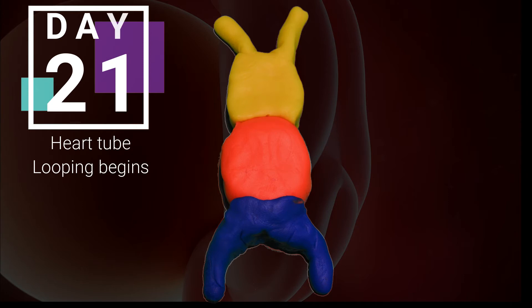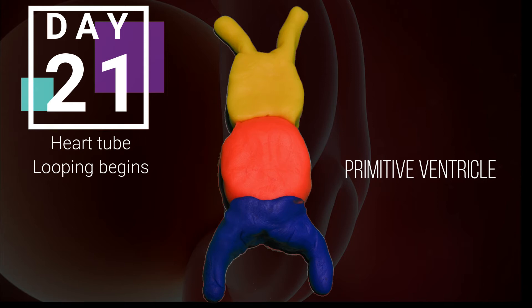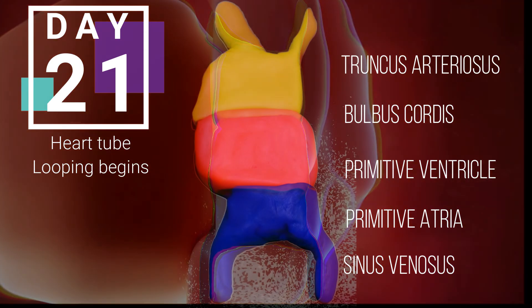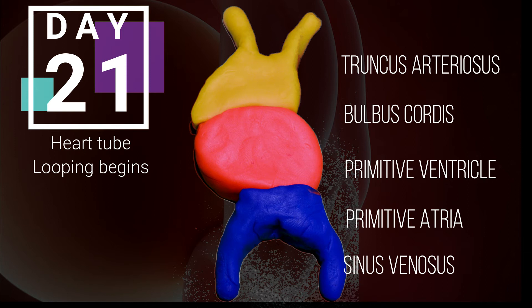Five bulges, or dilations, begin forming on the heart tube. These bulges develop into the primitive ventricle, which will eventually be the left ventricle and inflow of the RV; the primitive atrium, which becomes the rough portions of the left and right atriums; the sinus venosus, which becomes the right and left horn; the bulbous cordis, which becomes the right ventricle; and the truncus arteriosus, which will be the aortic and pulmonary trunks and valves.